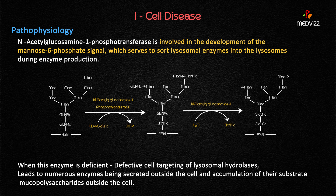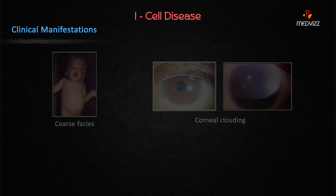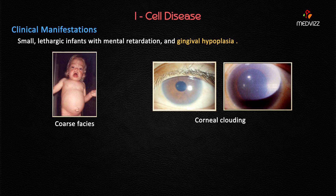The important points to remember about I-cell disease: the enzyme involved in the mannose-6-phosphate signal is N-acetyl glucosamine-1-phosphotransferase. Deficiency causes defective cell targeting for lysosomal hydrolysis, leading to accumulation of mucopolysaccharides outside the cell. Clinical manifestations include small, lethargic infants with mental retardation.